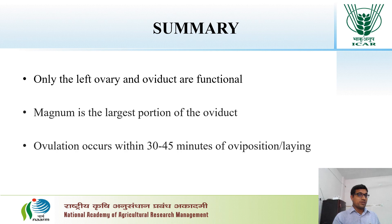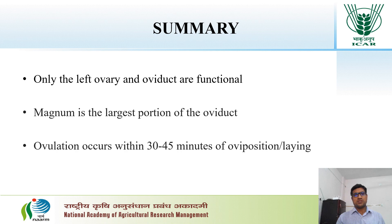In summary, in the case of birds, only the left ovary and oviduct remain functional. The magnum is the largest portion of the oviduct, and the ovulation occurs within 30 to 45 minutes after oviposition or the laying.